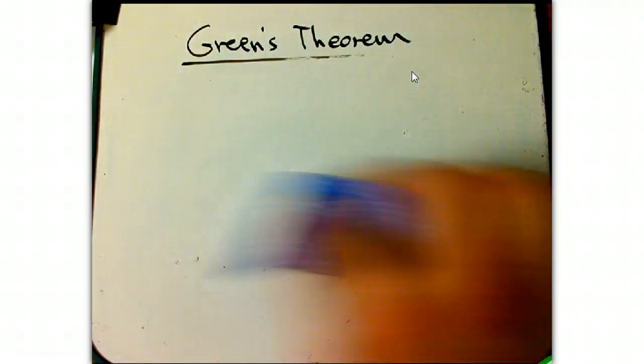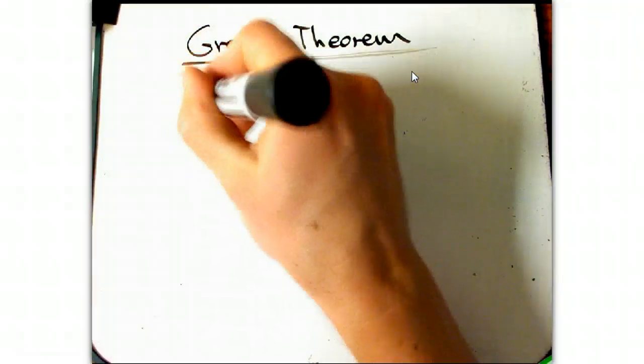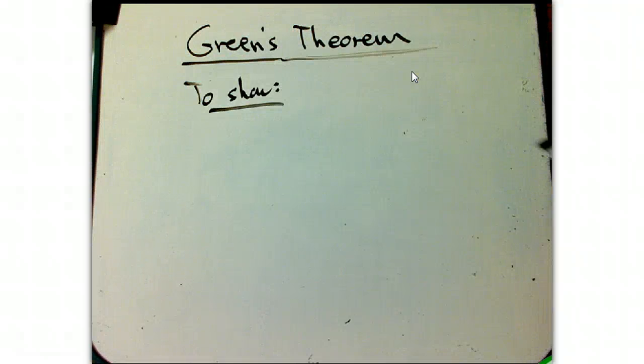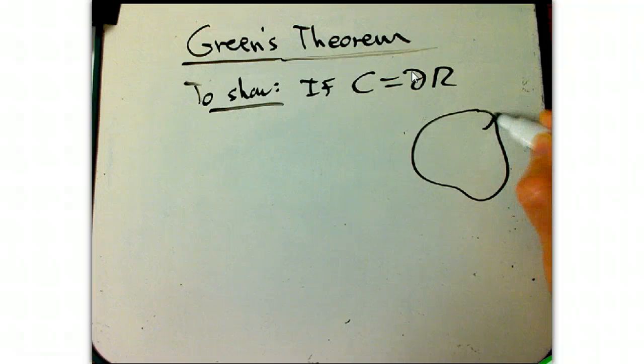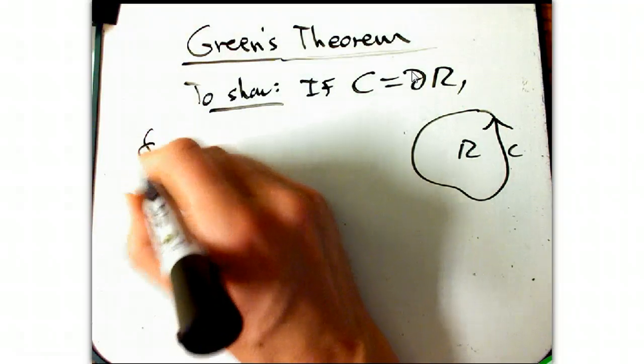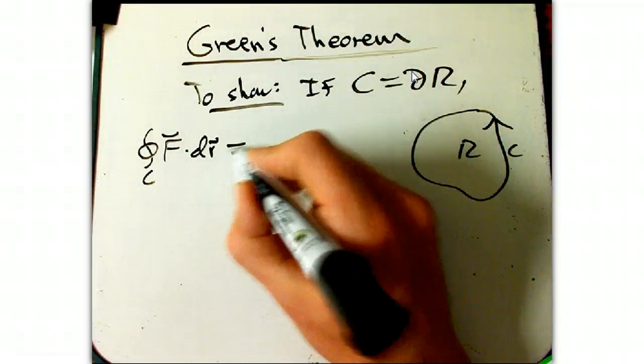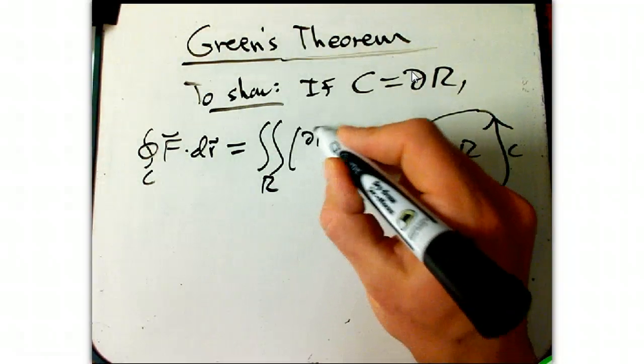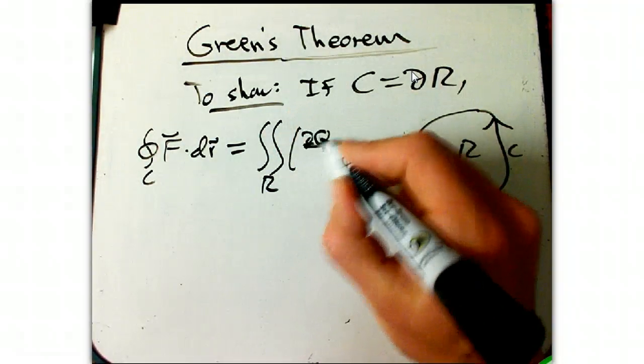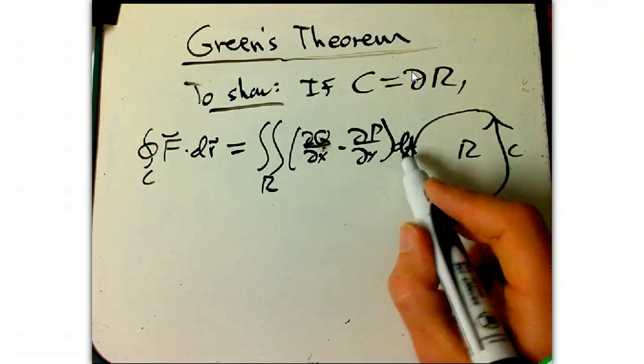So, we've got all the pieces in place. So we want to show that if c is the boundary of some region r, so here's r in the middle and here's c, then the circulation around c of a vector field is equal to the integral over the interior of dq/dx minus dp/dy, the scalar curl, and then you integrate it dA.